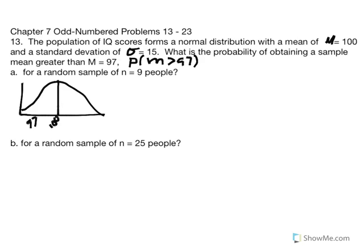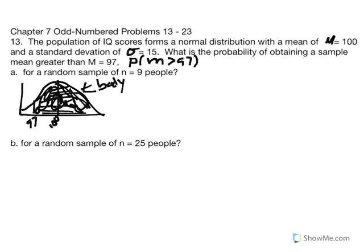The probability of a sample mean greater than 97 corresponds to the entire shaded area to the right of 97, which represents the body of the distribution. So what we need to do next is convert that sample mean into a z-score.